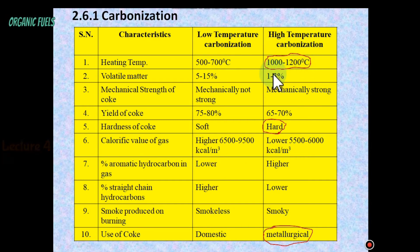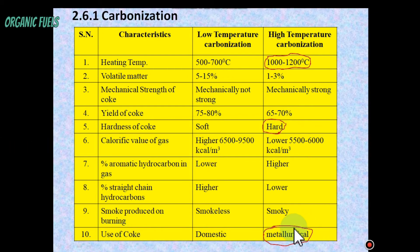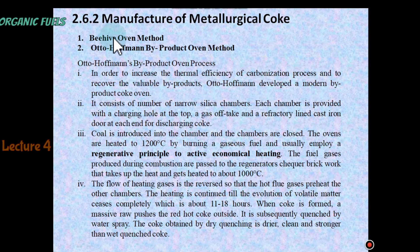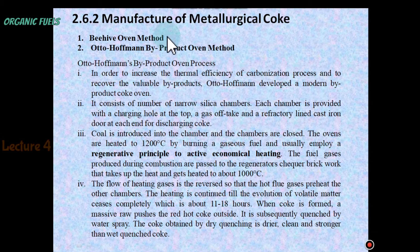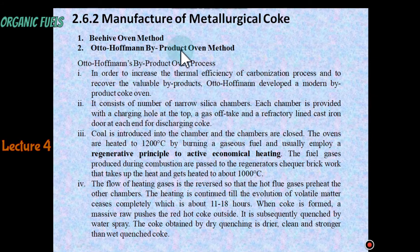Key points in high temperature carbonization: the temperature is 1000–1200°C, the coke produced is very hard, and it is used for industrial or metallurgical purposes. The two methods for manufacturing metallurgical coke in industry are the Beehive oven method — a classical method — and the Otto Hoffman by-product oven method, which is the modern method currently frequently used in industries. We will discuss only the Otto Hoffman by-product oven method.